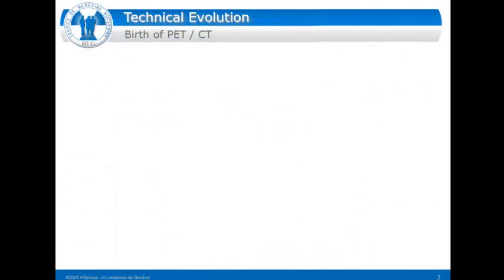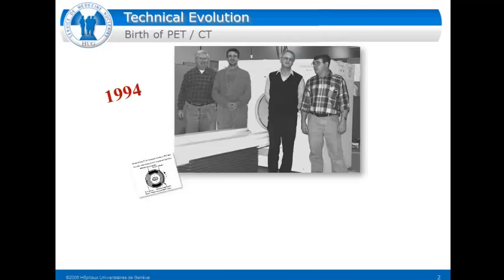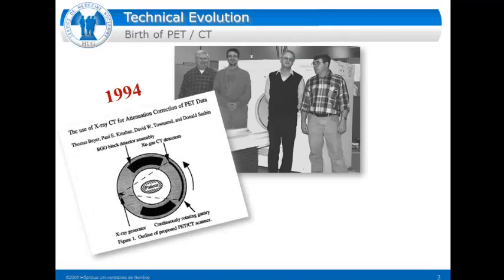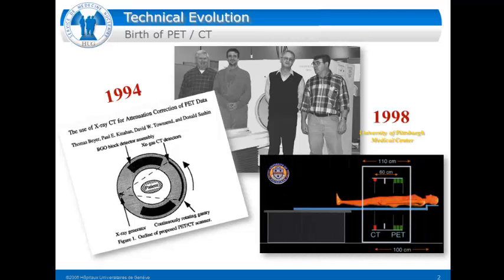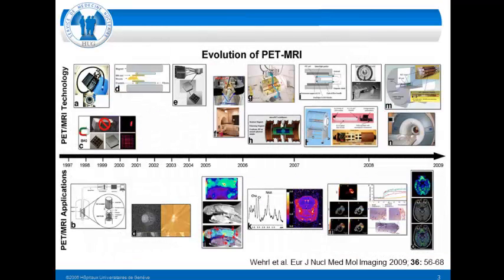Everybody knows the success story of PET-CT, where the first publication and prototype was developed in 1994 by the Geneva team, and four years later in the US the first fully integrated PET-CT system was produced. It became a big success, and now a nuclear medicine department without PET-CT is almost unimaginable. Let's look at how it went in PET-MR.